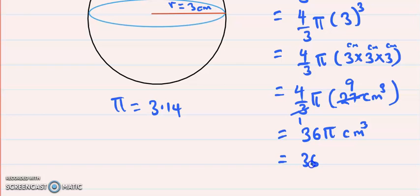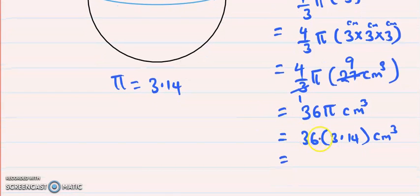It will be 36 multiplied by 3.14 cm³. When you multiply 36 times 3.14, what you will get is 113.04 cm³.